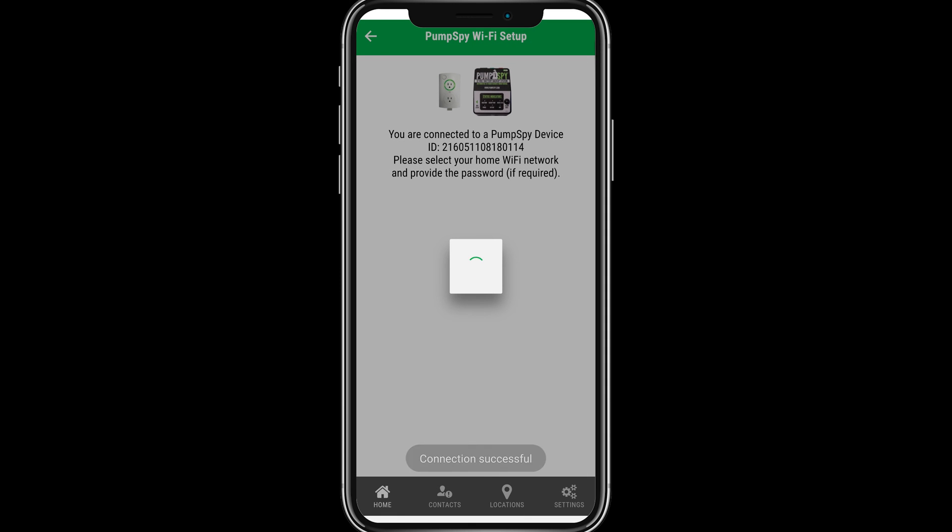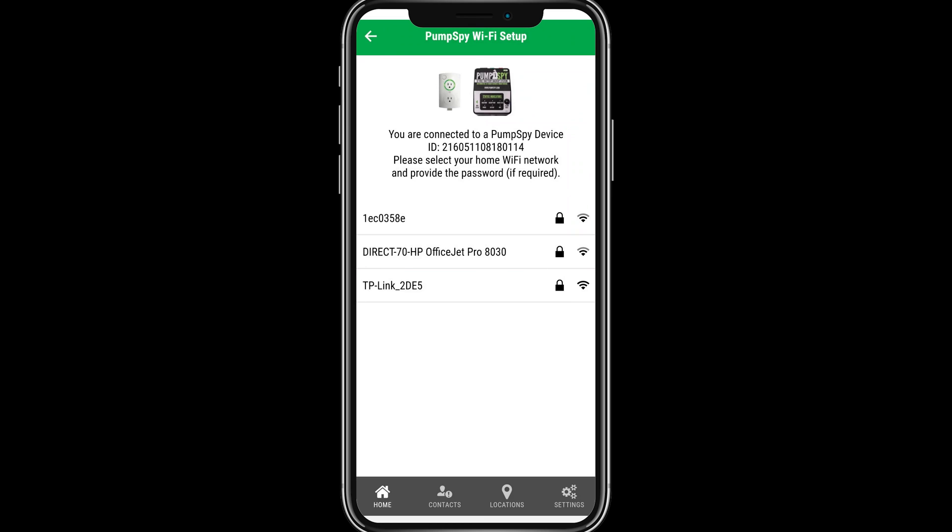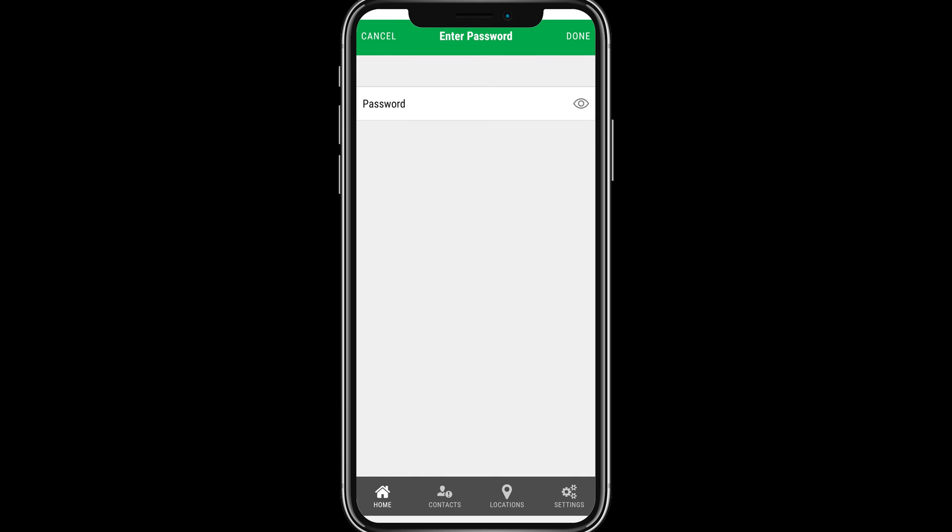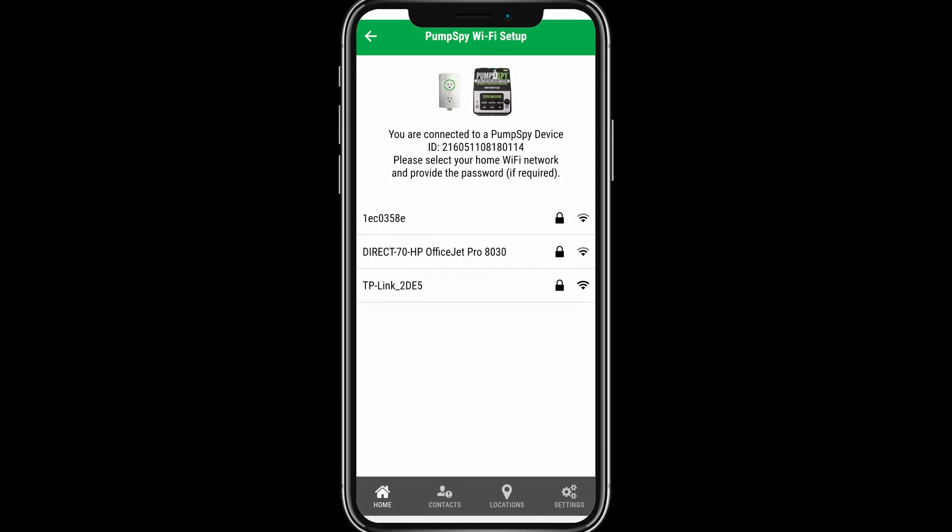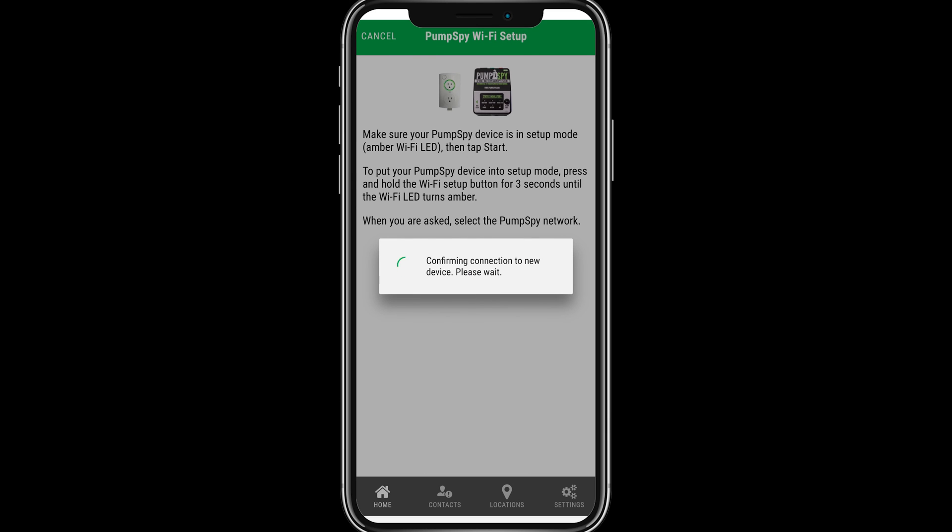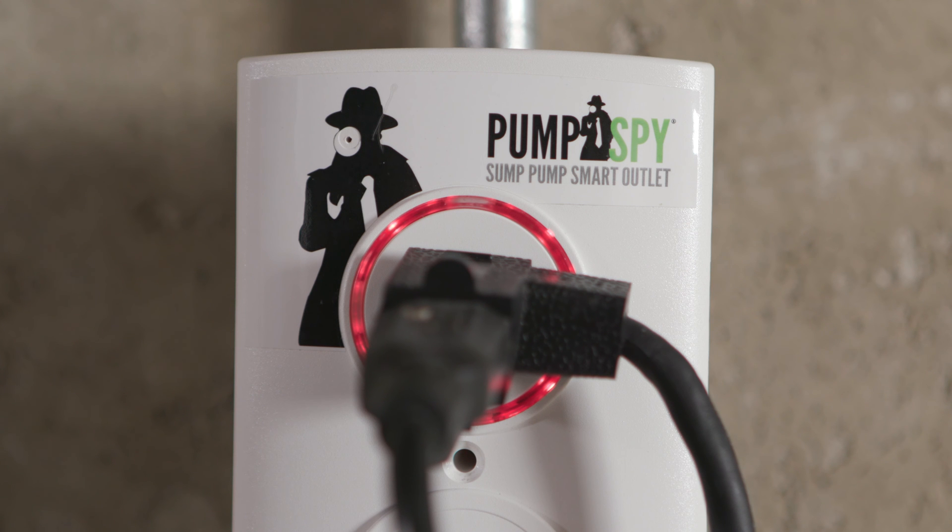Follow the on-screen instructions to connect the smart outlet to a Wi-Fi network. Once the smart outlet is connected to a Wi-Fi network, the light ring will illuminate green.